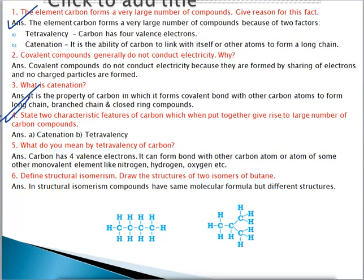Next question: what do you mean by tetravalency of carbon? Tetravalency means four valence electrons. Carbon has four valence electrons, meaning in the outer shell carbon has four electrons. So it can form four bonds with other elements like nitrogen, oxygen, hydrogen, etc. That is called tetravalency.